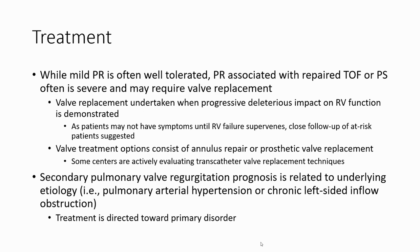Treatment: mild pulmonary regurgitation is often well-tolerated. Pulmonary regurgitation associated with tetralogy of Fallot or pulmonary stenosis repair is often severe and may require valve replacement. Secondary pulmonary valve regurgitation prognosis is related to underlying etiology, pulmonary arterial hypertension, or pulmonary valve disease.